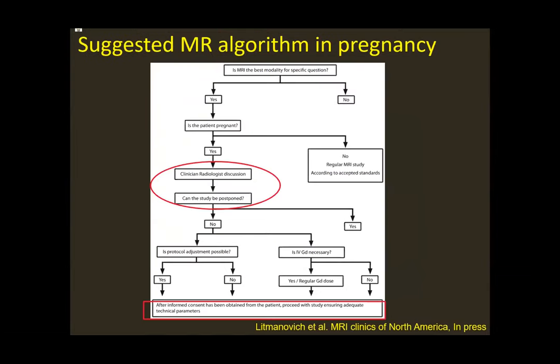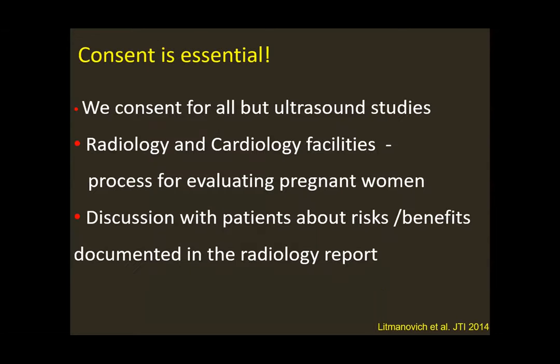For the suggested cardiac MRI algorithm in pregnancy, similarly, we discuss whether the study can be postponed and obtain informed consent. The study is then performed with the adjustments discussed — without gadolinium, using short imaging sequences, and going straight to the main clinical question. Consent is essential; we consent for all but ultrasound studies. We find it extremely important and reassuring for the patient — patients arrive to scanning much more relaxed, and scan quality has increased since we introduced the informed consent process.